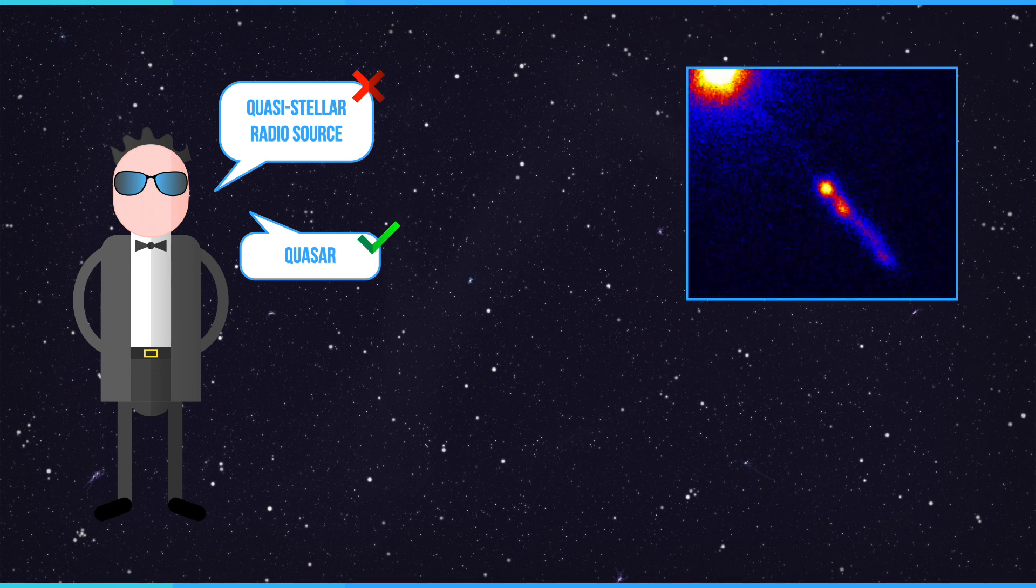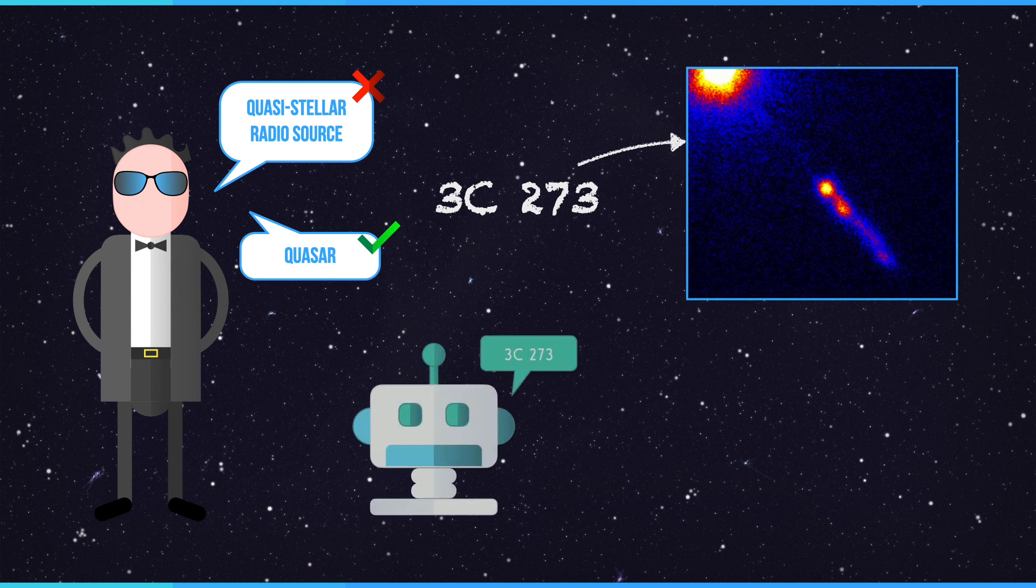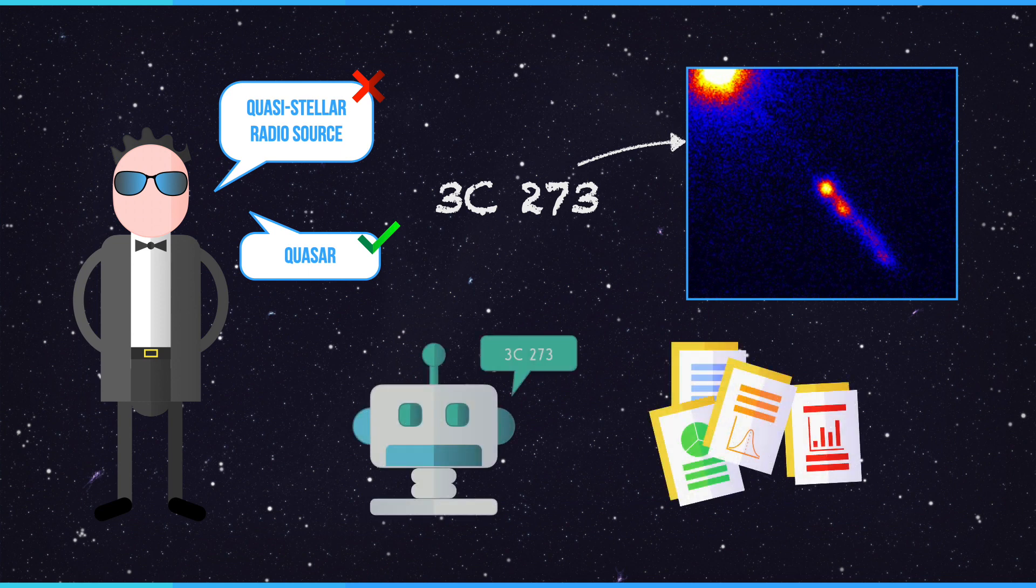The object was known as 3C273. But that's rather boring and doesn't really roll off the tongue, unless you're a robot or you like catalogue numbers. So let's call it… Quinton the Quasar. That works pretty well.